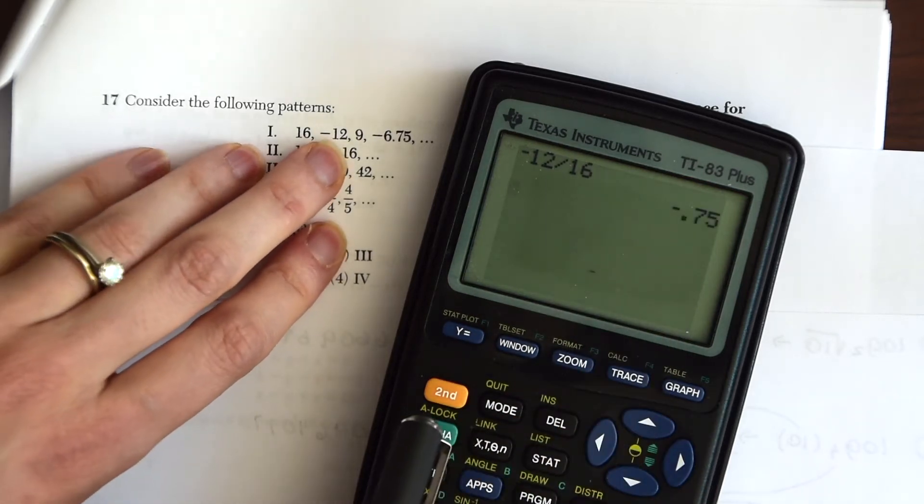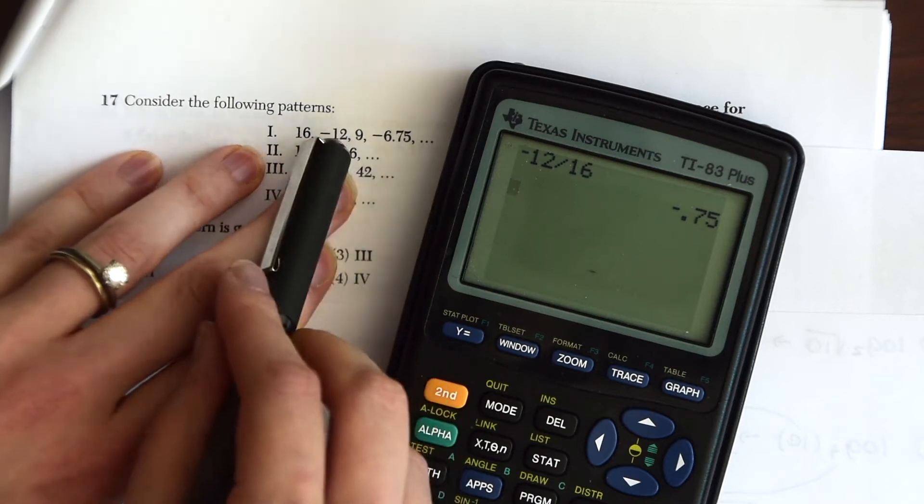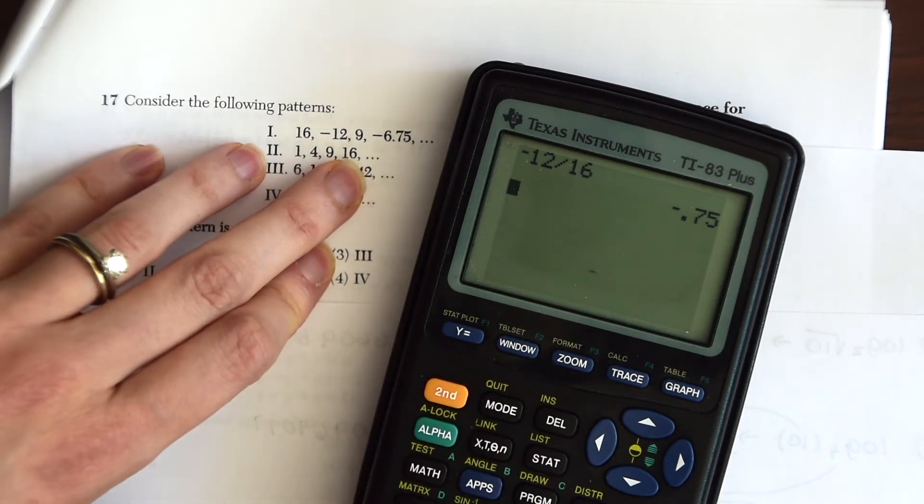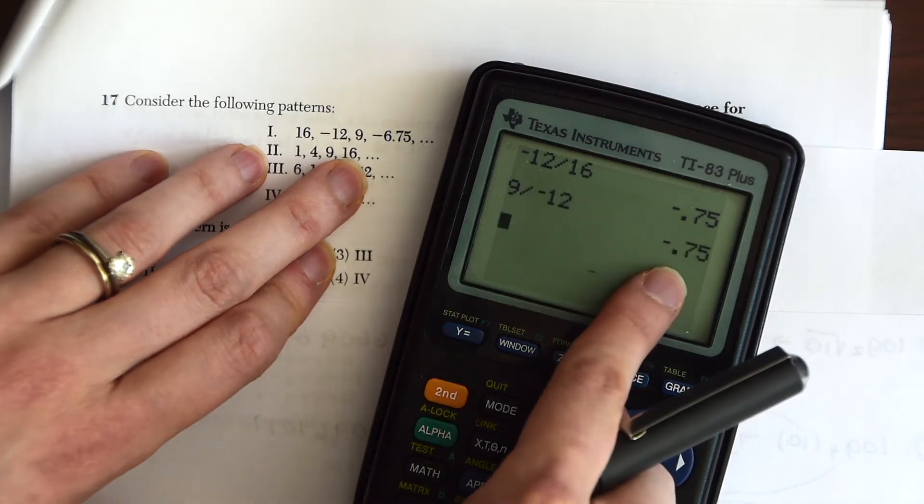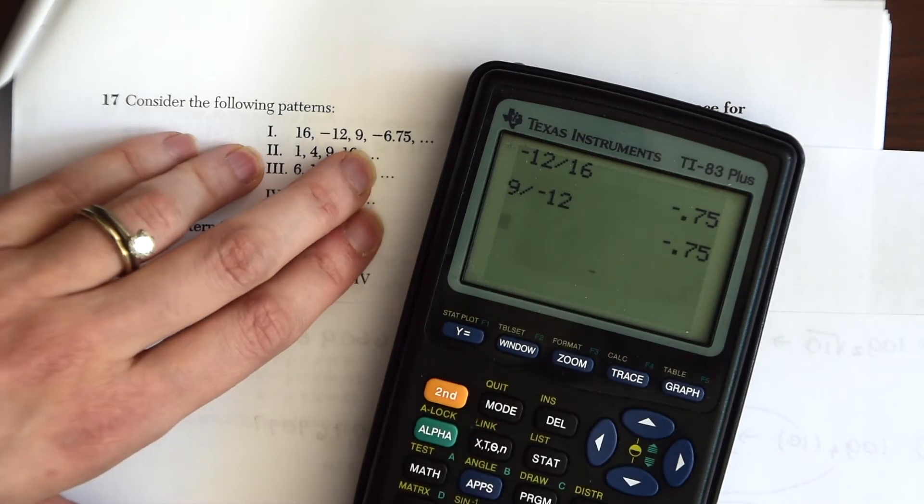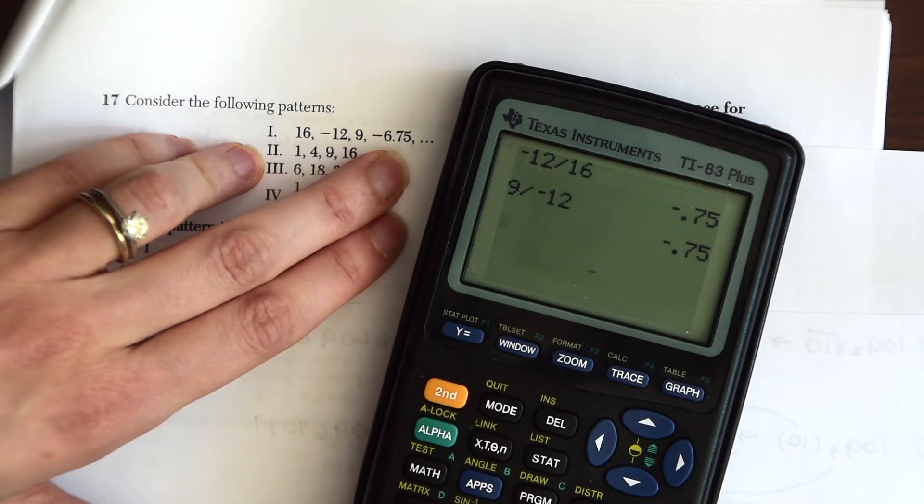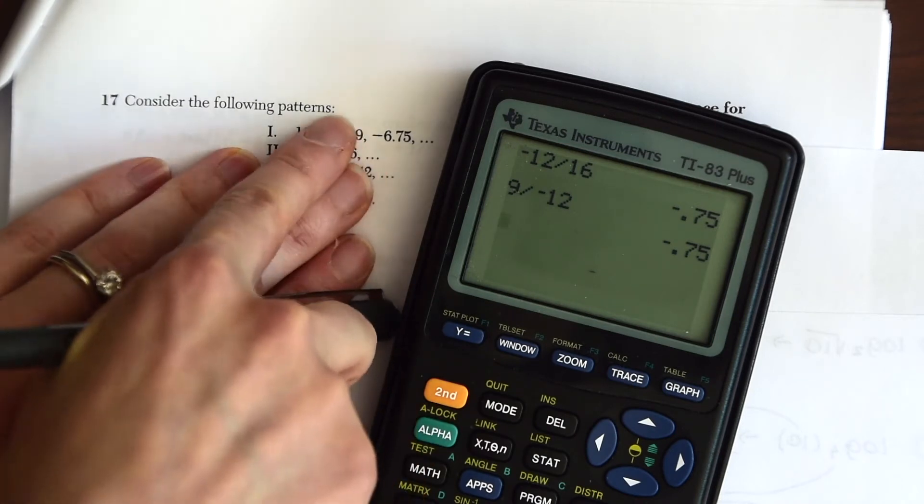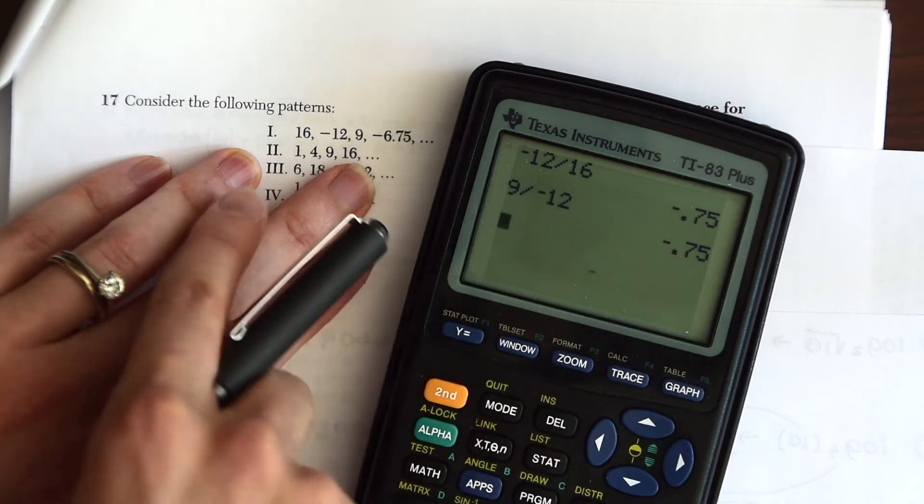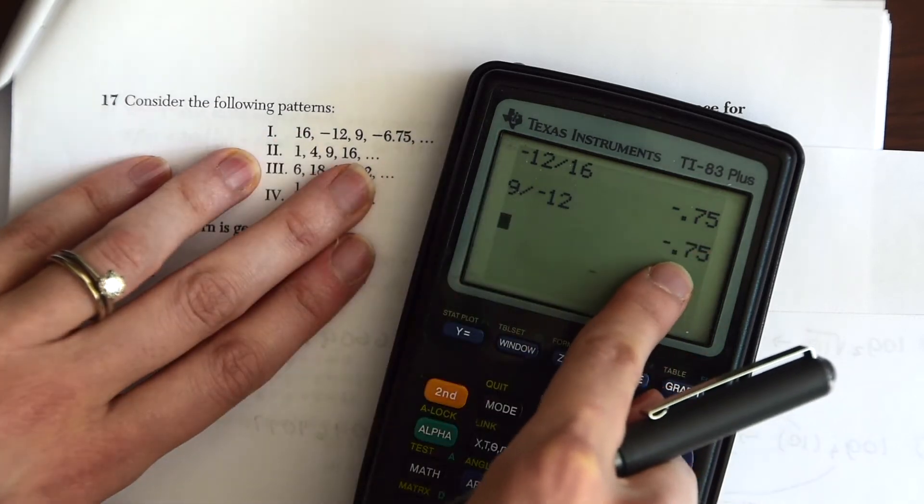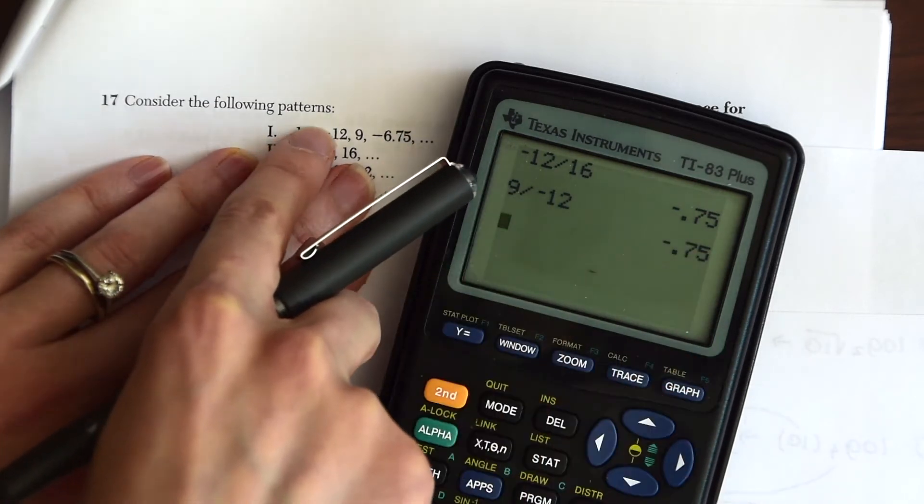Okay, and then let's see the relationship between 9 and negative 12 by doing the same thing. So we're going to take 9 and divide by negative 12, negative 0.75 again. And then let's just double make sure, because this looks good so far, that it looks like we are multiplying times negative three-halves to each term.